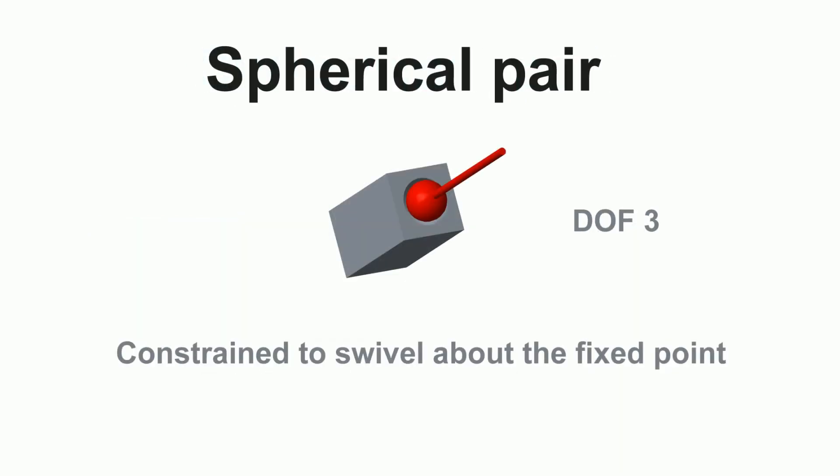Five, spherical pair has three degrees of freedom because it can move right to left, top to bottom, and rotate over its axis.